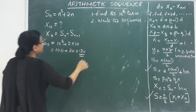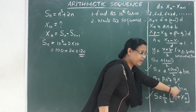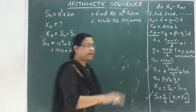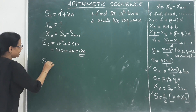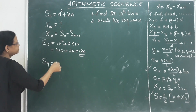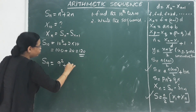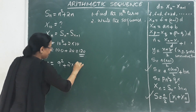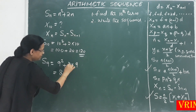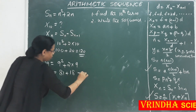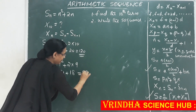Now we find S(n-1), which is S9. S9 equals 9 squared plus 2 into 9, that is 81 plus 18, which equals 99.